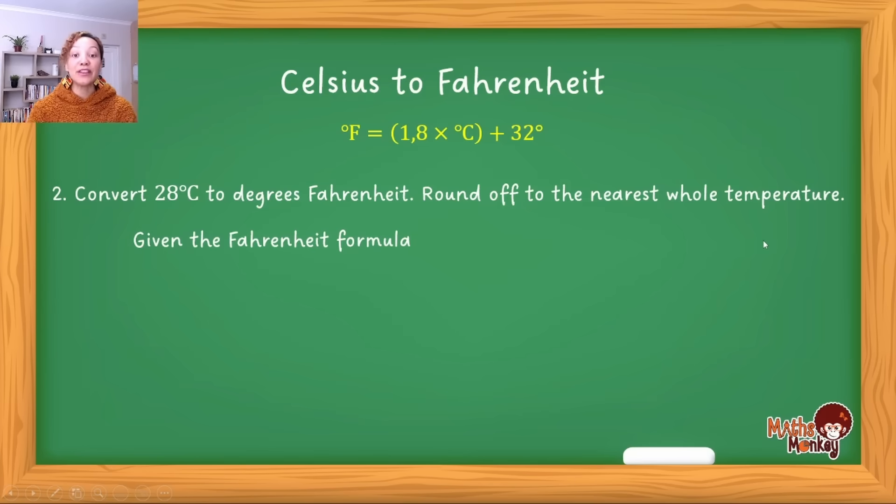Given the Fahrenheit formula, which is what you want because 'to Fahrenheit' means Fahrenheit is on the left. You're given 28°C in the question, so wherever you see Celsius in the formula, place the 28. Put these values into your calculator and you get 82.4°F. So 28°C equals 82.4°F. The question says round off to the nearest whole temperature, so that's 82°F.